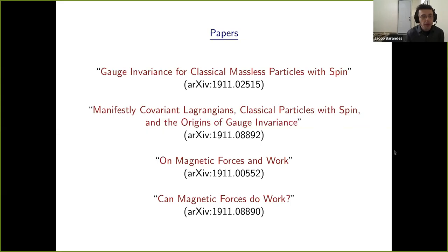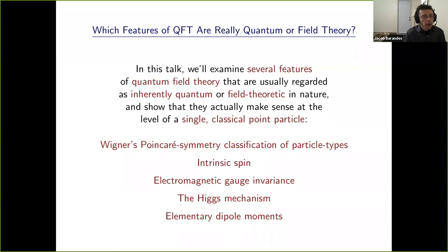This is based on a bunch of papers — I can refer to these later if people want to look them up. I'm going to talk about quantum field theory, but in particular which features of quantum theory are inherently quantum or field theoretic, and which features already make sense at the level of a single classical point particle.